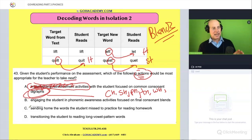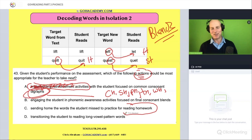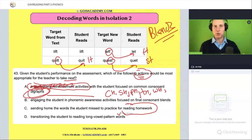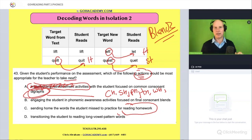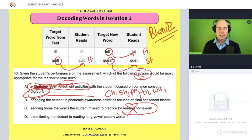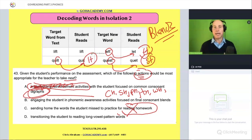Option C: sending home the words the student missed to practice for reading homework. As a parent, I can tell you a lot of things are missed. It's very hard, and little things like this can easily go over the parent's head. If you're in need of a specific result, sending something home and asking the parent to pick up the slack — it might be dropped or miscommunicated. So that's probably out too.